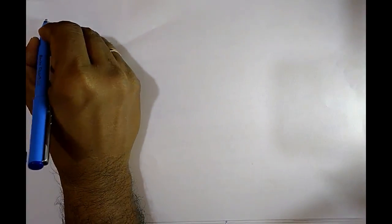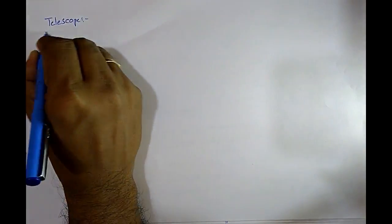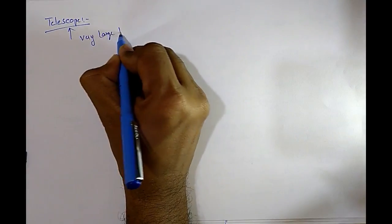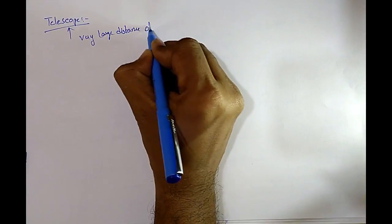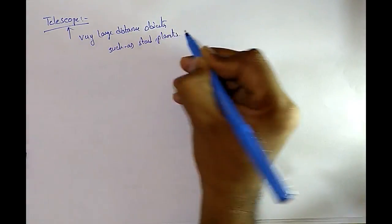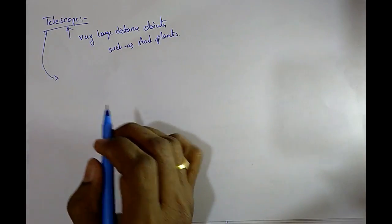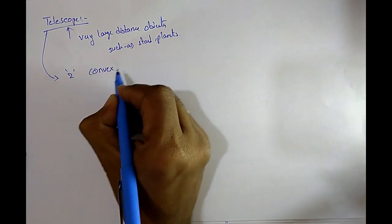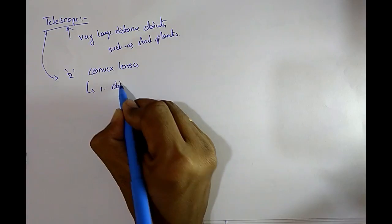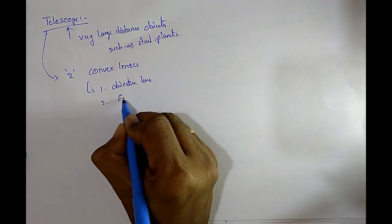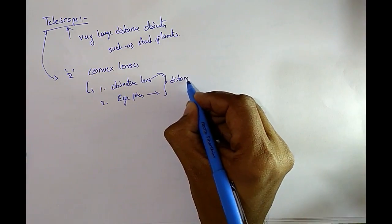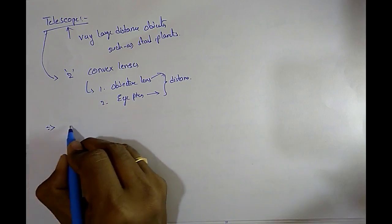The next important optical instrument is the telescope. It is used to look at very large distance objects such as stars and planets. The telescope is also a combination of two convex lenses — one is the objective lens and the second one is the eyepiece, which is nearer to the eye. These two are separated by a distance.